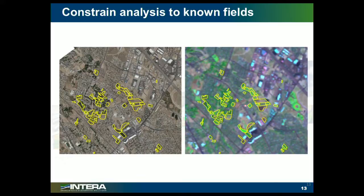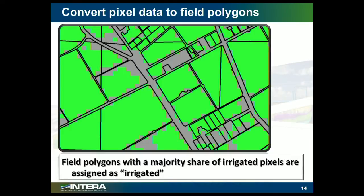So we want to make sure — you can see on the right-hand side there are some green areas — this is an area where you've got a mix of ag and urban. So you want to make sure that you focus your analysis on only the agricultural areas where you think there may be irrigation going on. That's a really important part of the analysis.